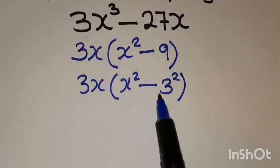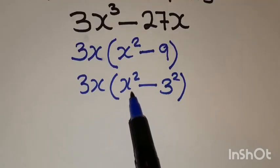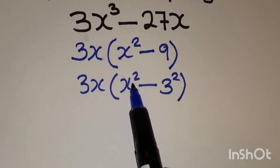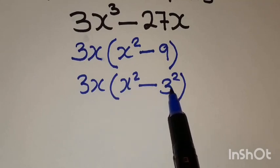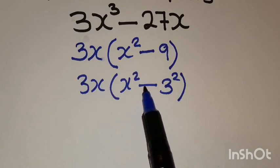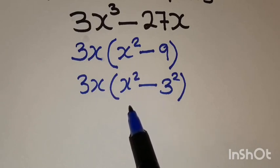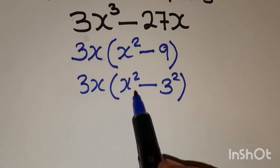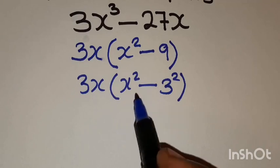When you look at what is in the brackets, x squared is a square number, 3 squared is a square number, and there is a minus in between these square numbers. It means we have the difference of two squares. So we are going to factorize this as follows.